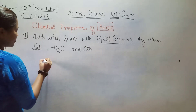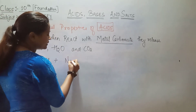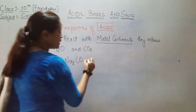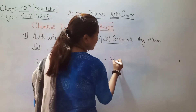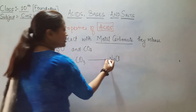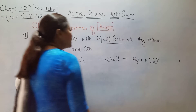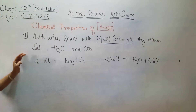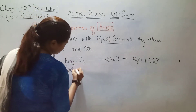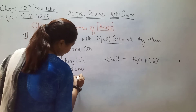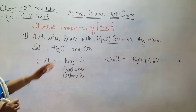Let's take an example. When HCl reacts with metal carbonate Na2CO3, balancing the equation gives us NaCl along with a water molecule plus CO2 released. So HCl is hydrogen chloride, Na2CO3 is sodium carbonate, and they react to form common salt NaCl along with a release of carbon dioxide.